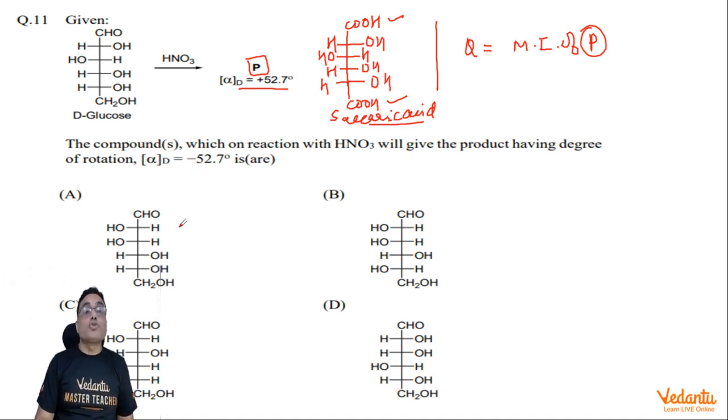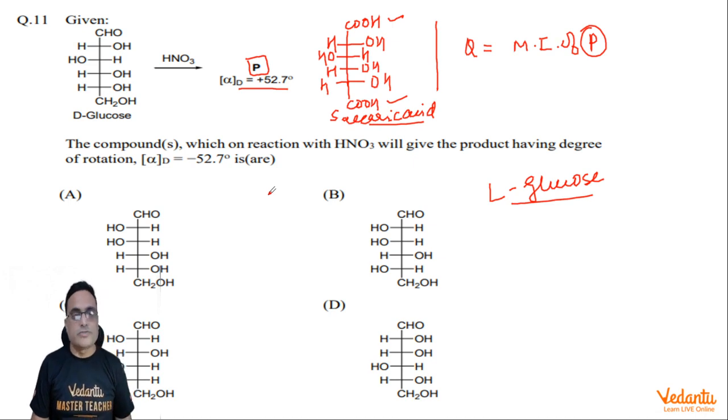L-glucose treated with HNO3 will make the carboxylic acid as the mirror image of P. If P is equal to plus 52.7, then we need minus 52.7. That's very simple. We need to write L-glucose, the mirror image of D-glucose.